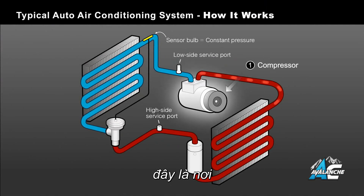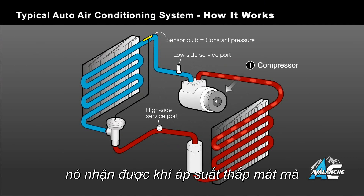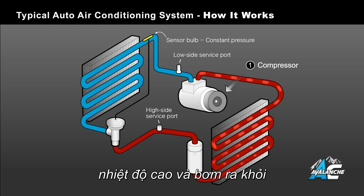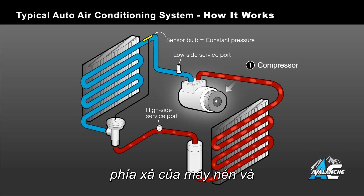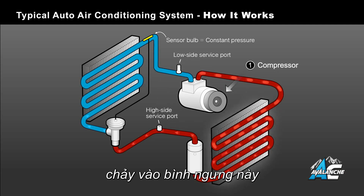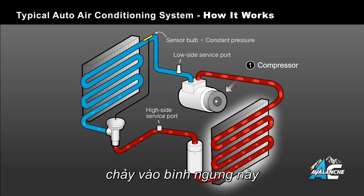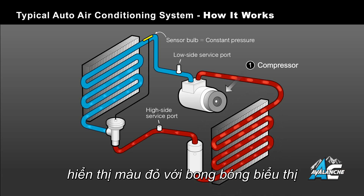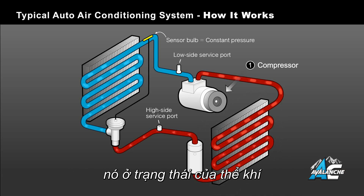The compressor is the workhorse of the system and is where we'll start. It receives cool, low pressure gas which is compressed into a high pressure, high temperature gas and pumped out of the discharge side of the compressor and flows into the condenser. This high pressure, high temperature gas is shown as red with bubbles, indicating it's in a gas state.